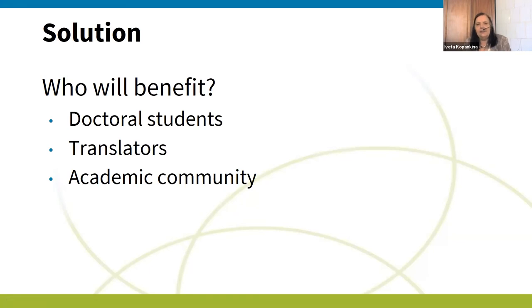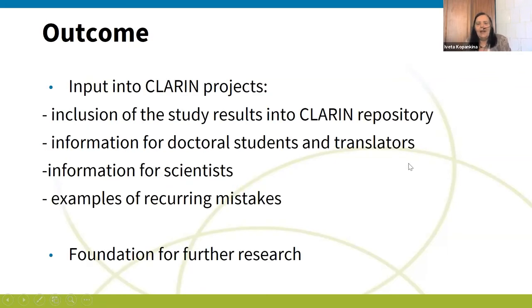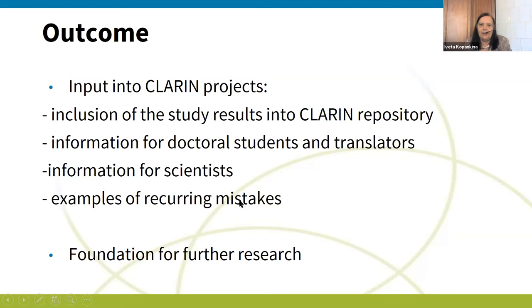Who will benefit? Doctoral students first of all, translators, and the academic community. The outcome and meaning for the CLARIN project: inclusion of the study results into the CLARIN repository — it was started in March 2020. It will provide information for doctoral students and translators, information for scientists, and examples of recurring mistakes. It will hopefully serve as a foundation for further research. Thank you. This seems doubly relevant for a PhD session as it also works for the material.